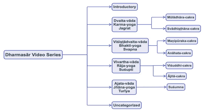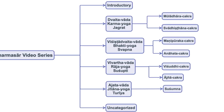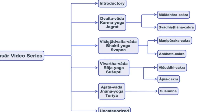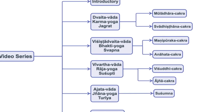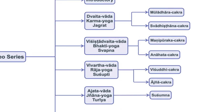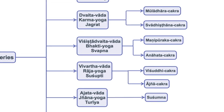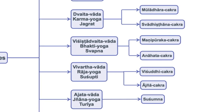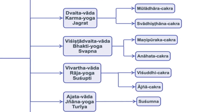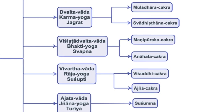So I just want to go over really quick the root ontology, or the principle of organization, of all this material. Here's a simplified diagram. The whole collection, the whole series from the very beginning, is classified into six categories: Introductory, Dvaitavada, Vishishtadvaitavada, Vivartavada, Ajatavada, and uncategorized. And then these are divided according to the seven chakras. The various video series or playlists come under those categories, and as I go through the whole archive I'm going to assign a particular classification to each playlist and each video.